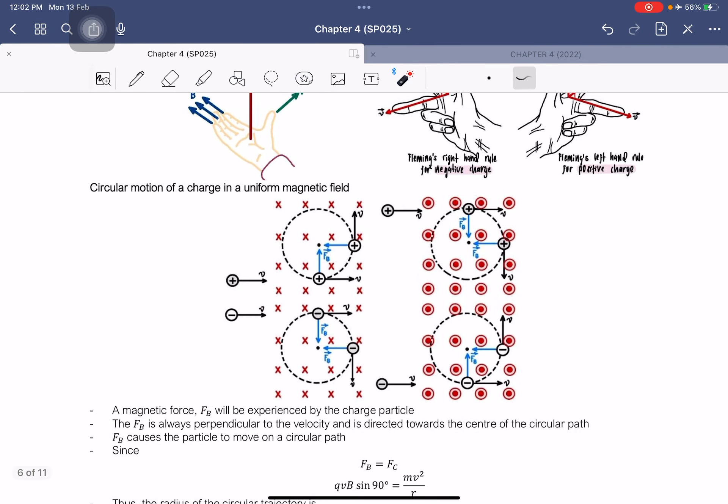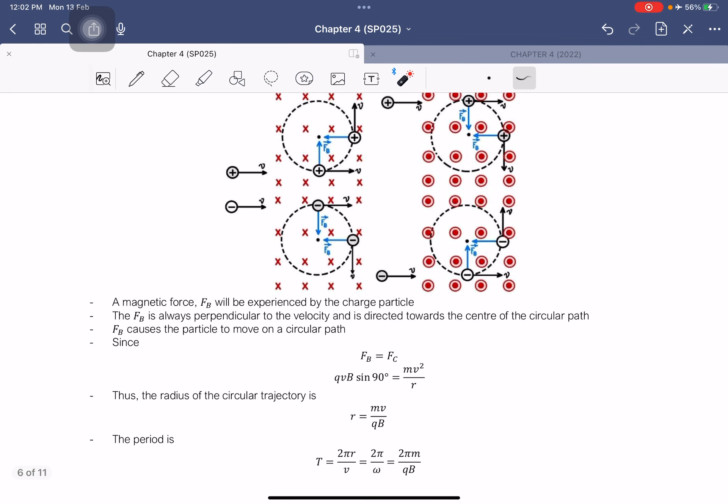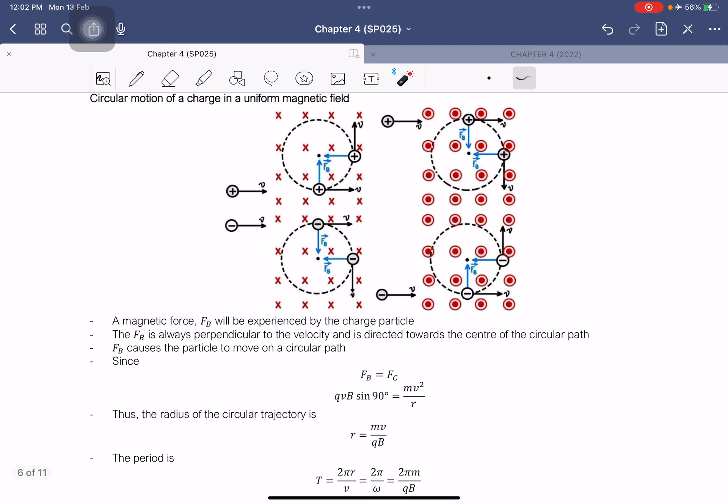For the circular motion of a charge in a uniform magnetic field, a magnetic force will always be experienced by the charge particle. The magnetic force will always be perpendicular to the velocity and is directed towards the center of the circular path. What causes this particle to move is actually because of this magnetic force.